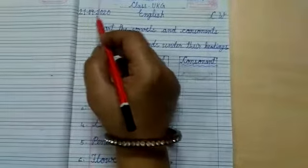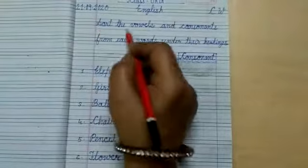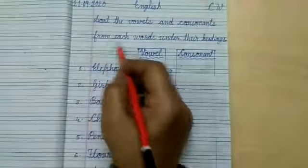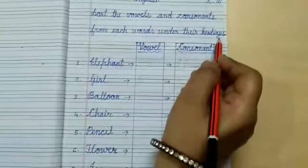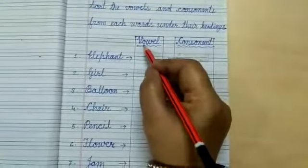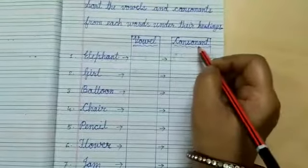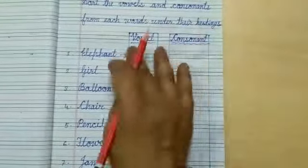First of all, write the date and CW. Next, sort the vowels and consonants from each word under their headings. I have two headings here. What is V-O-W-E-L vowel and C-O-N-S-O-N-A-N-T, consonant. These are two headings here.